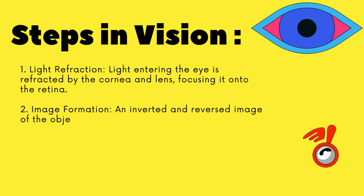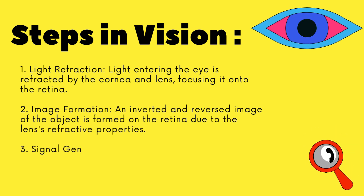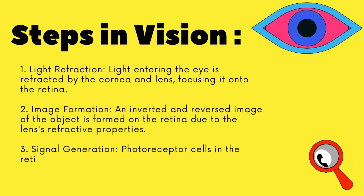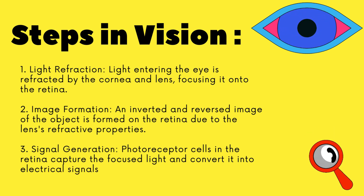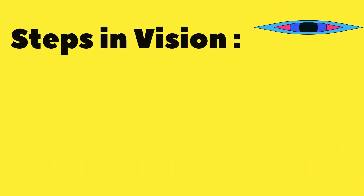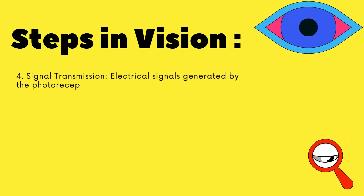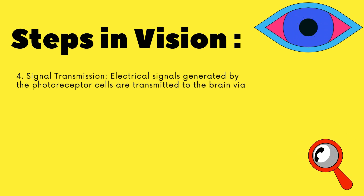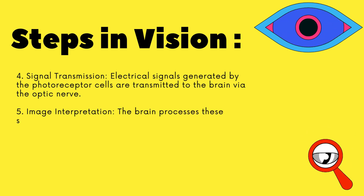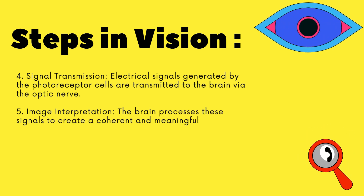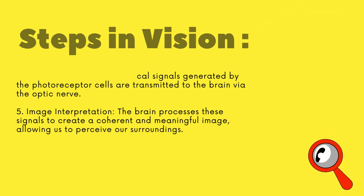Step 2 — Image formation: an inverted and reversed image of the object is formed on the retina due to the lens's refractive properties. Step 3 — Signal generation: photoreceptor cells in the retina capture the focused light and convert it into electrical signals. Step 4 — Signal transmission: electrical signals generated by the photoreceptor cells are transmitted to the brain via the optic nerve. Step 5 — Image interpretation: the brain processes these signals to create a coherent and meaningful image, allowing us to perceive our surroundings.